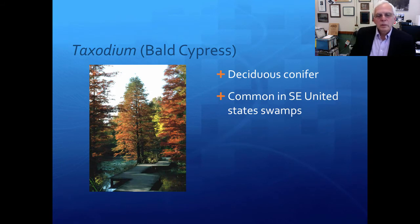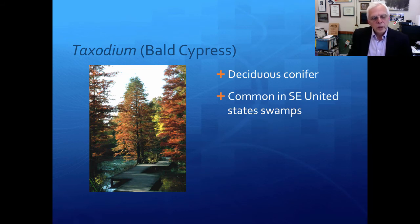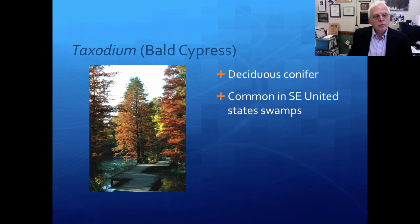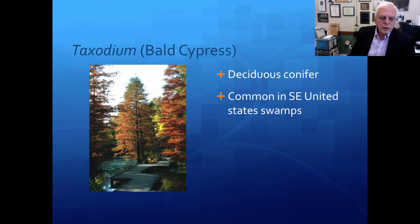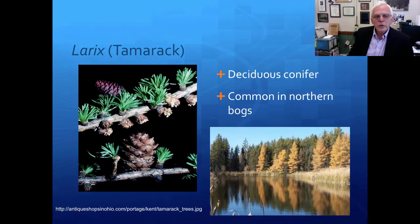Here's Taxodium, the bald cypress — a beautiful deciduous tree that is pretty common in the southeast United States in swamplands. It is quite a remarkable plant. It'll grow as far north as about 43 degrees north latitude in North America at least. So that's the bald cypress.